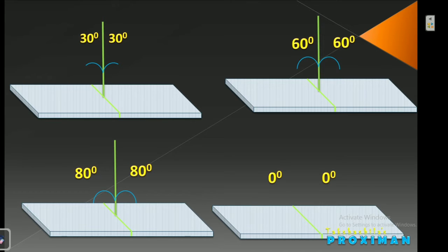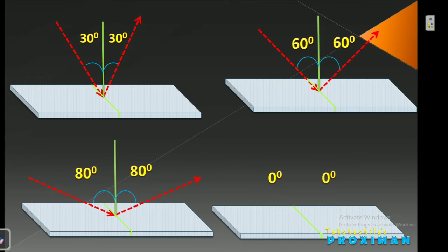Let us understand the First Law of Reflection with more examples. When an Incident Ray makes an angle of 30 degrees with the Normal, it always gets reflected back at 30 degrees with the Normal. If it makes 60 degrees, it reflects back at 60 degrees. If it makes 80 degrees, it reflects back at 80 degrees. When it makes 0 degrees with the Normal, meaning it is perpendicular to the plane mirror, it gets reflected back in the same direction from which it came.